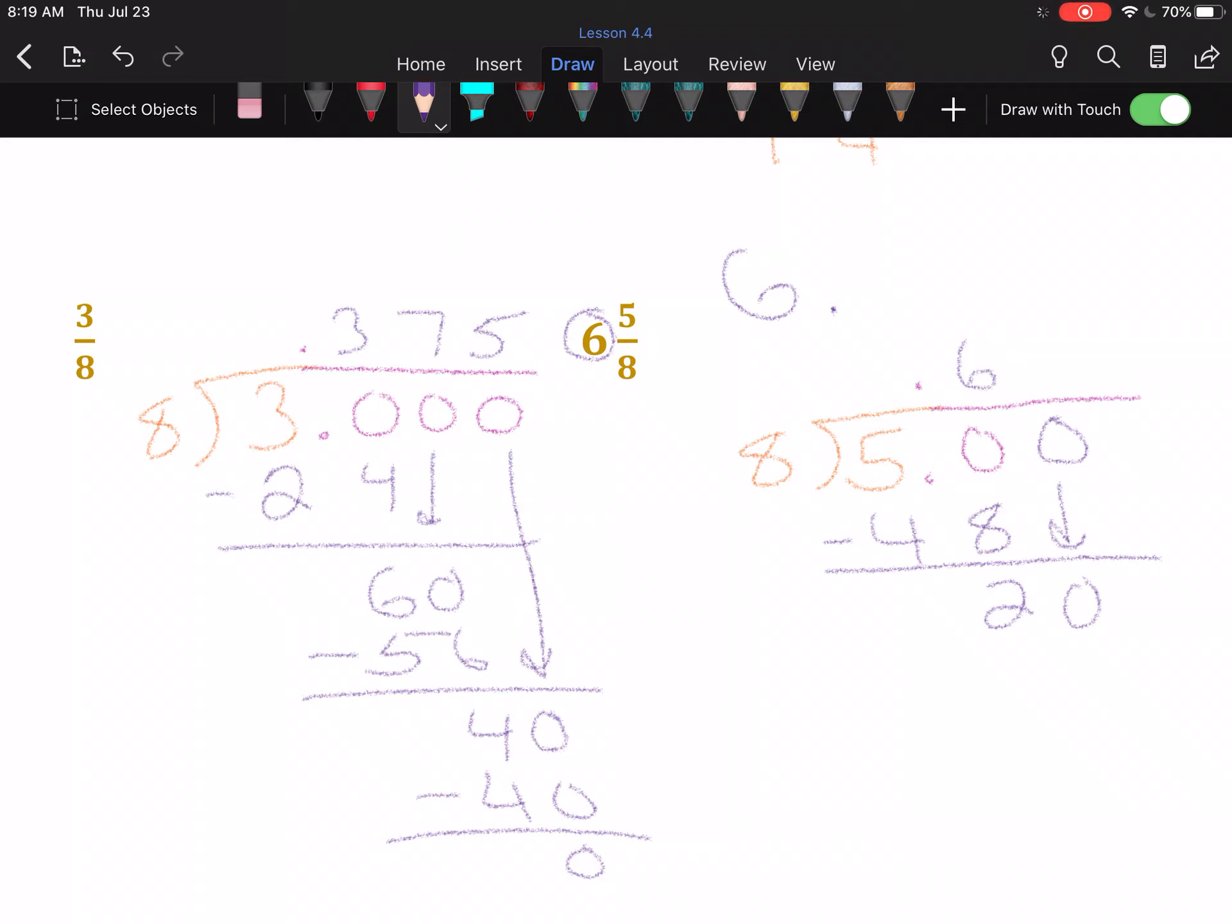Eight goes into twenty twice. Two times eight is sixteen—that's four. Add another zero and drop it. Eight goes into forty five times, and that finally leaves us with no remainder. So our answer is 6.625.